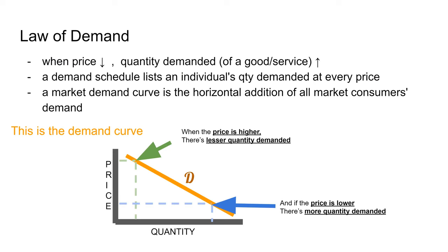The law of demand states that when prices go down, quantity demanded goes up, and vice versa. It explains that the relationship between price and quantity demanded is inverse, because as things get cheaper, you tend to buy more. A demand schedule lists an individual's quantity demanded at every possible price. When you combine everyone in the market's demand schedule, you get the demand curve, which you see on the screen right here.